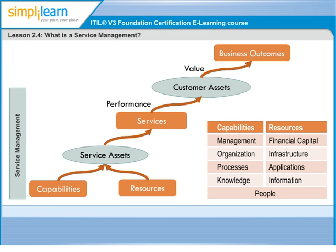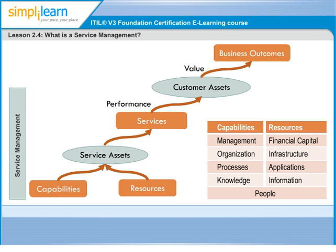But before that, let me explain two more terms: performance and value. Performance is a measure of what is achieved or delivered by a system, person, team, process, or IT service. From our email as a service example, effective use by all users, number of mails delivered to the intended recipients, etc., are part of the performance measure of email service.